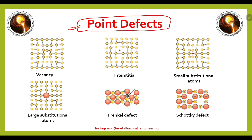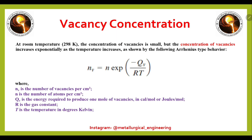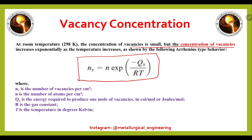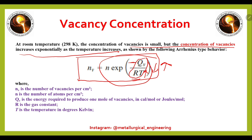The next topic is point defects, which are thermodynamically stable defects. Various types of point defects include vacancy, interstitial, small substitutional atoms, large substitutional atoms, Frenkel defect, and Schottky defect. For vacancy concentration, at room temperature the concentration of vacancies is small, but it increases exponentially as temperature increases. The formula is: N_v = N · exp(−Q_v / RT). When temperature increases, the exponent becomes less negative, so the overall concentration increases exponentially.